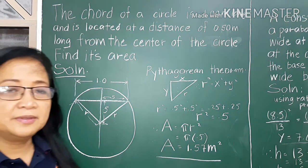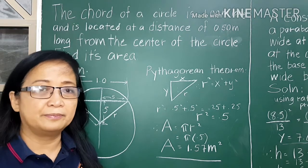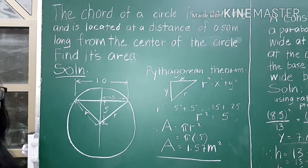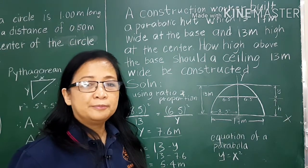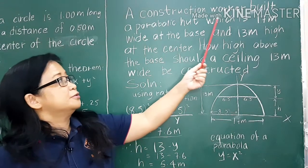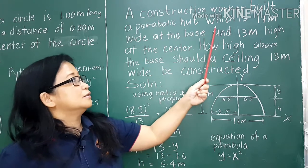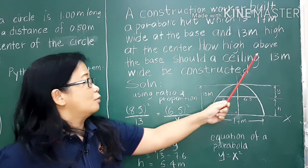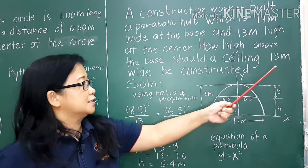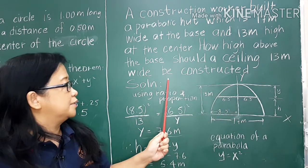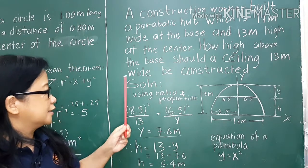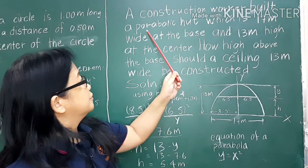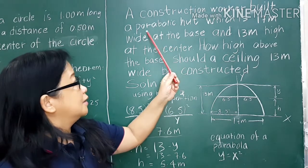It's very important in solving a problem that you understand first what is known and what is required. Now we'll go to another problem. A construction worker built a parabolic hut which is 17 meters wide at the base and 13 meters high at the center. How high above the base should a ceiling 13 meters wide be constructed? I already wrote the solution.